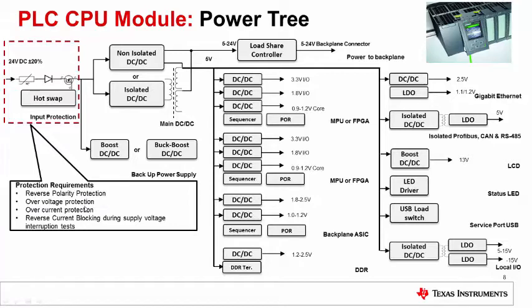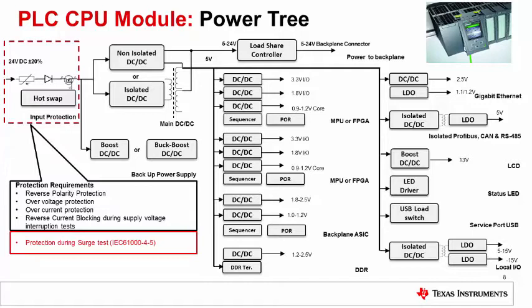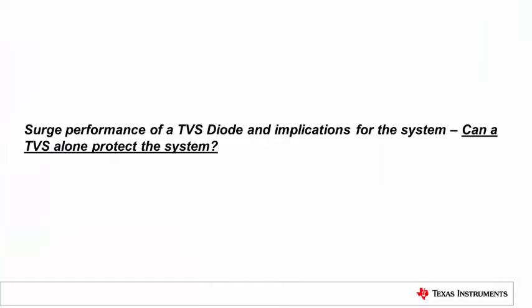The protection requirements for this end equipment include: input reverse polarity protection, which can occur due to field miswiring; overvoltage protection due to the external field power supply; overcurrent protection; and reverse current blocking during supply voltage interruption tests. In addition to these, protection during the surge test is also required, since the input ports of this externally powered equipment undergo the full IEC test suite.